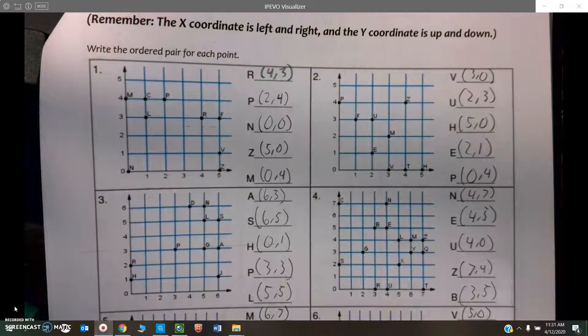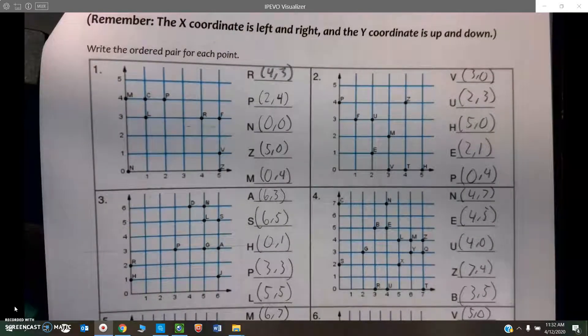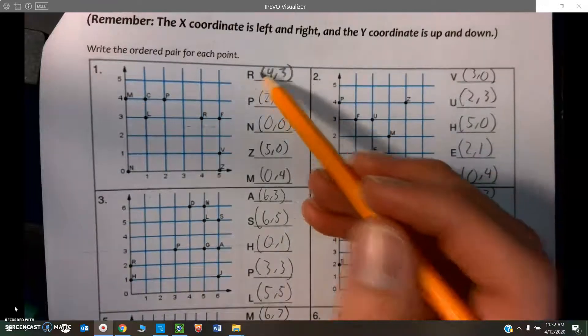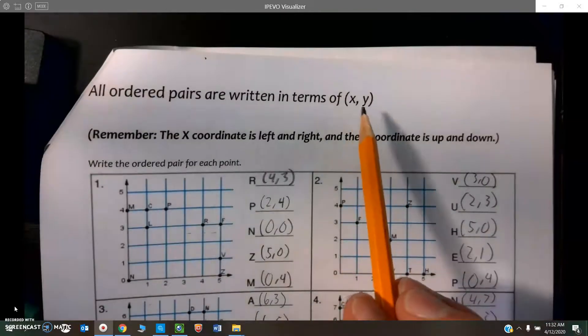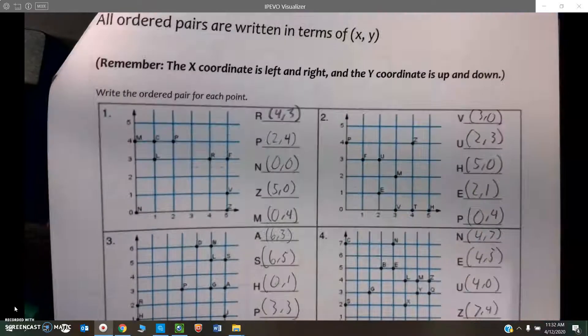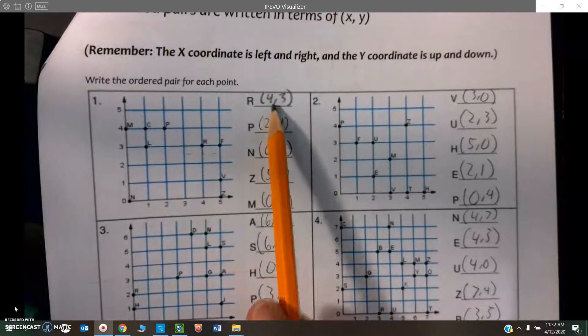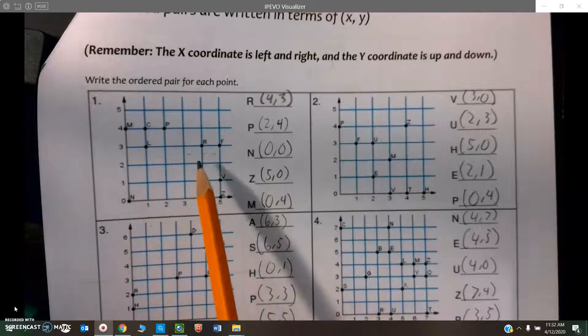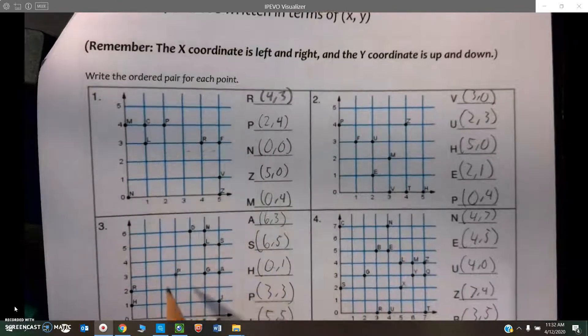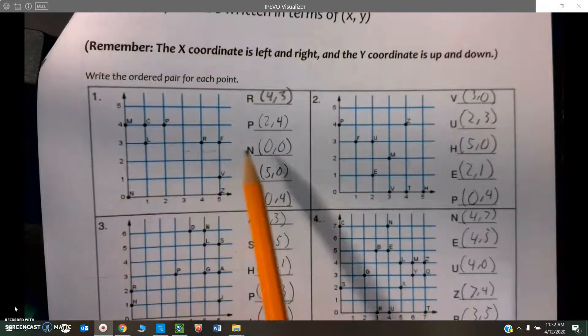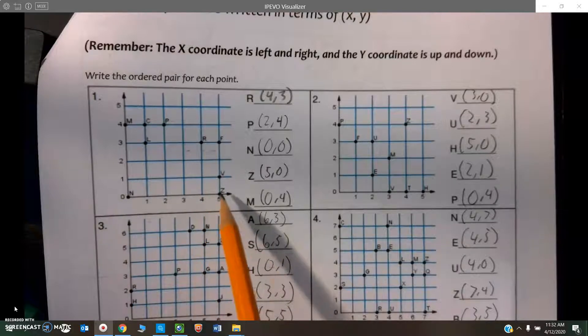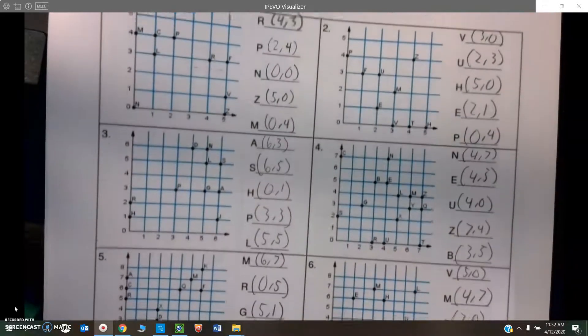Looking at our coordinates, so yesterday they gave you the coordinate and you had to say what point it was. Here they're giving you the point, and you need to write the ordered pair. Once again, all ordered pairs are written in terms of (x, y). X is left and right, y is up and down. So R is 4 over, 3 up. P is 2 over, 4 up. N, you didn't go anywhere, so this is just at (0, 0). Z, 5 to the right, 0 up, and so on and so forth.